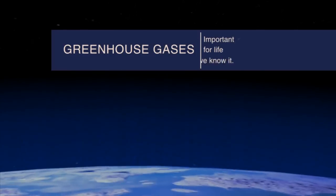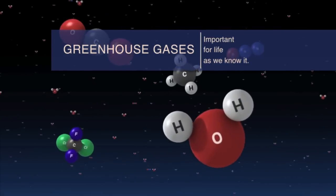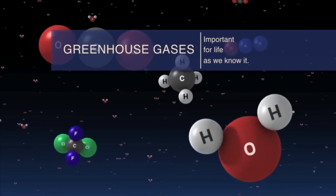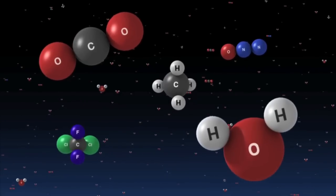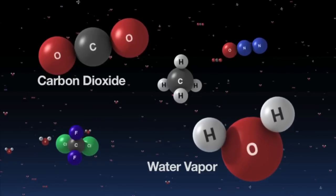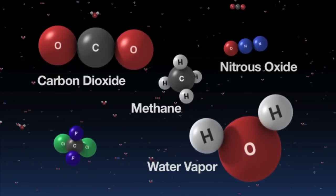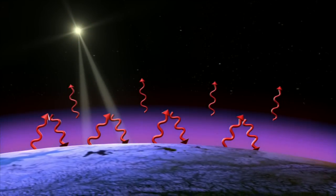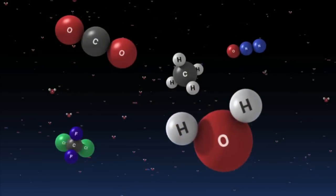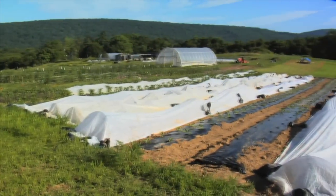How do we know that greenhouse gases lead to warming? As early as the 1820s, scientists began to appreciate the importance of certain gases in regulating the temperature of Earth. Greenhouse gases, which include water vapor, carbon dioxide, methane, and nitrous oxide, act like a blanket covering the Earth, trapping heat in the lower atmosphere, known as the troposphere. Although greenhouse gases are only a tiny fraction of Earth's atmosphere, they are critical for keeping the planet warm enough to support life as we know it.